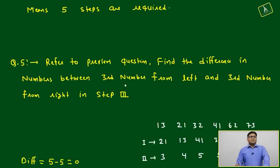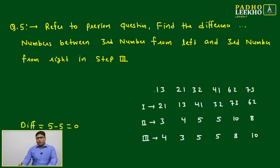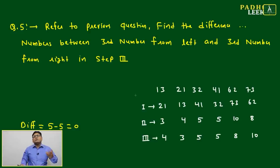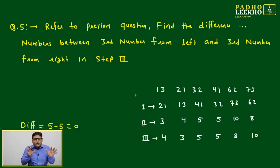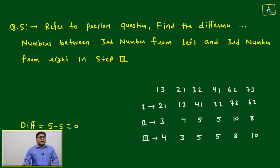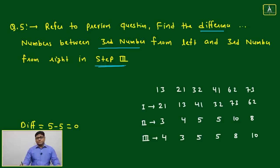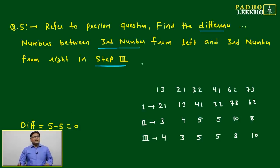Question 5 is yet another variety. Beyond the four variable types, we can also focus on specific positions within a step. Question 5 asks: referring to the previous question's data, find the difference between the third number from the left and the third number from the right in Step 3.